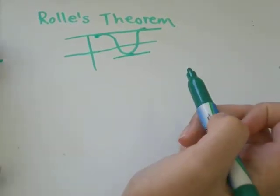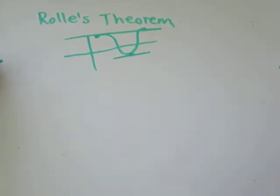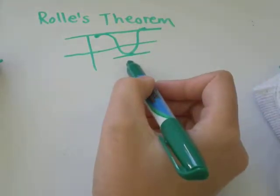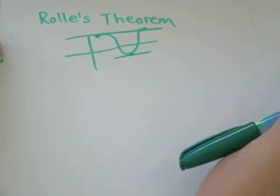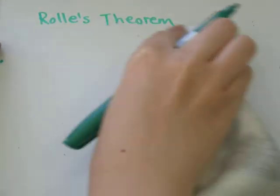So, what makes this different from the mean value theorem is that in Rolle's Theorem, f prime of c, the slope of this tangent line, is going to be zero instead of just some number other than zero.